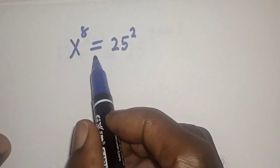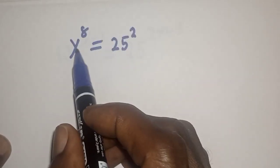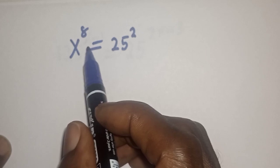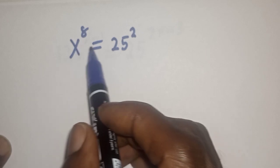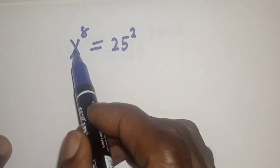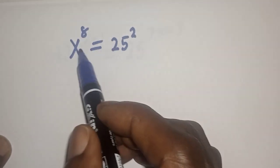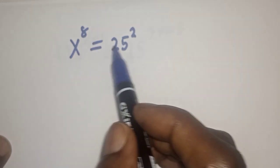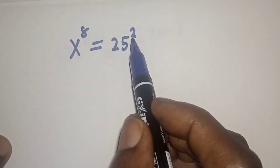Hello, welcome to Magis. In this class, we want to find the odd possible value of S from this equation: S raised to power 8 is equal to 25 square.